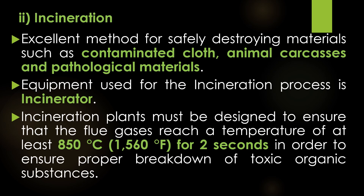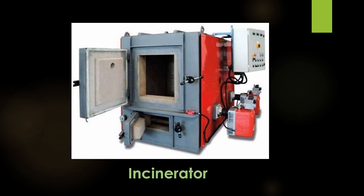The second method of dry heat sterilization is incineration. Incineration is an excellent method for safely destroying materials such as contaminated cloth, animal carcasses, and pathological materials. The equipment used for the incineration process is called an incinerator. Incineration plants must be designed to ensure that the flue gases reach a temperature of at least 850 degrees Celsius (1560 degrees Fahrenheit) for 2 seconds, in order to ensure proper breakdown of toxic organic substances. This is the image of the incinerator used for the incineration process.